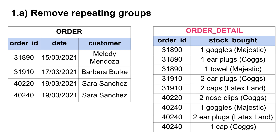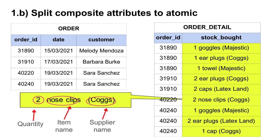Once we remove the repeating group of stock board to a separate table, the new data model looks as shown on screen. Since there are no more repeating groups, we can move on to the second action of first normal form: split composite attributes to atomic. Composite attributes are attributes that contain a combination of multiple attributes. The stock board attribute in the order detail table is composite — it seems to contain the quantity bought, the name of the stock item, and the name of the supplier. So we need to split that attribute into three atomic attributes.